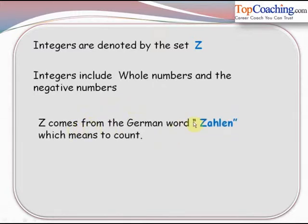Now Z comes from the German word Zahlen, which means to count. So integers are the numbers which are used for counting, and that is why they have been derived from the German word Zahlen, which means to count.